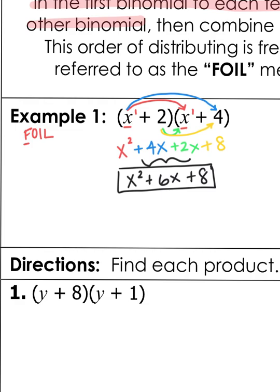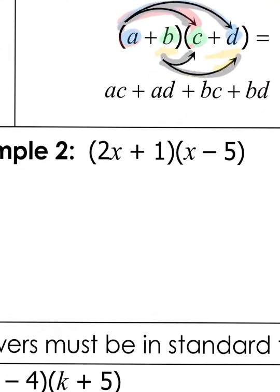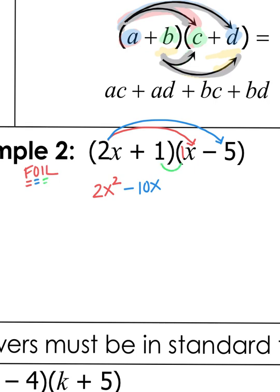Those are not like terms, so nothing else can be added together. Let's try another example: 2X plus 1 times X minus 5. Following FOIL, I do First: 2X times X makes 2X squared. Then Outside: 2X times negative 5 makes negative 10X. Then Inside — the two touching each other — 1 times X is 1X.